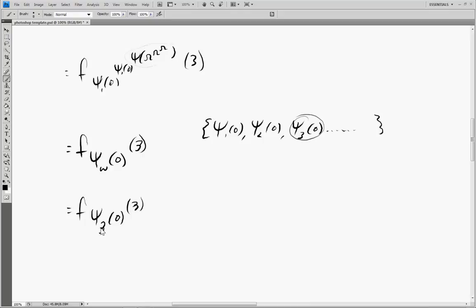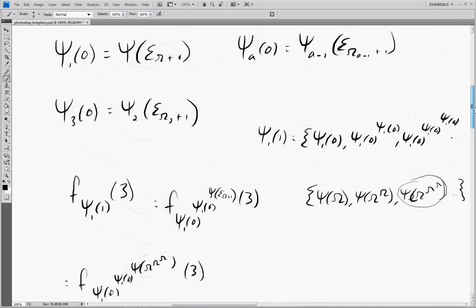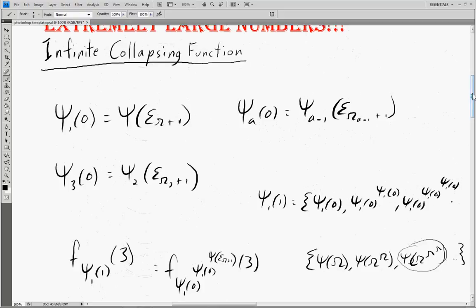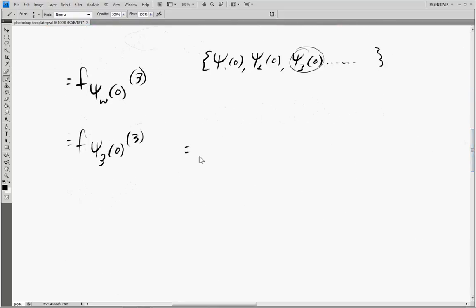And then using our new rule, basically this formula up here, we turn this into the previous psi function and the limit to how far that can go. So this turns into f_ψ₂(ε_{ω₂+1})(3).